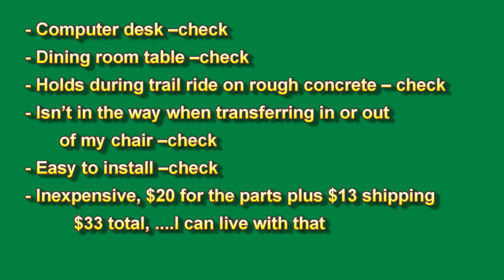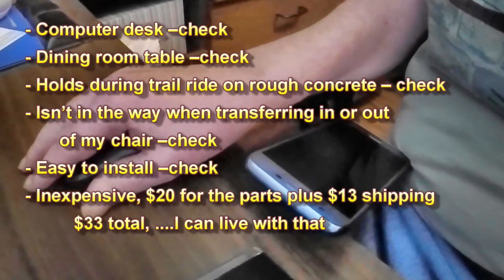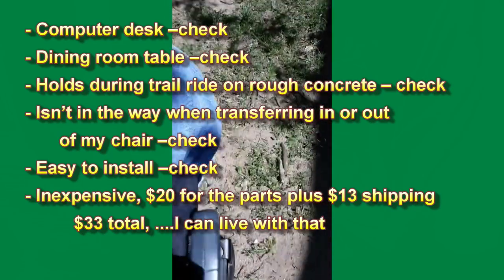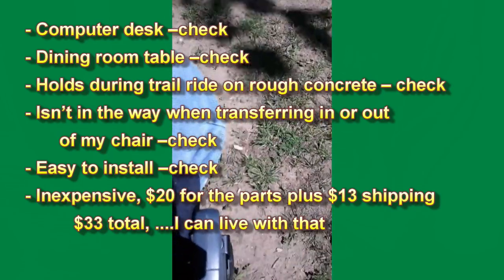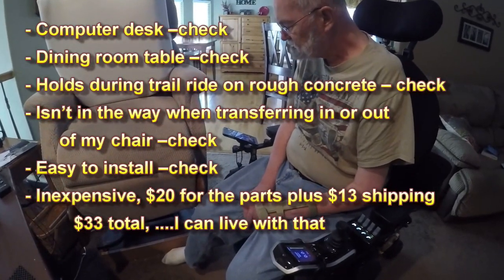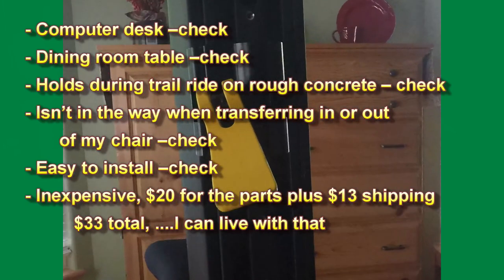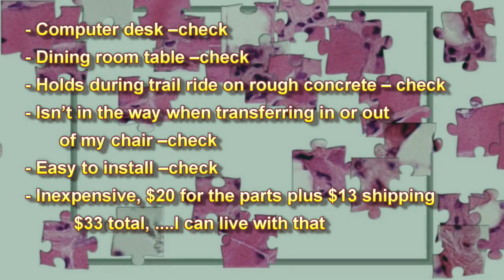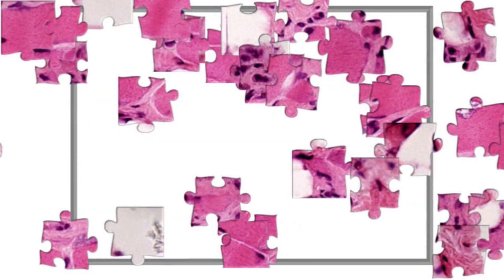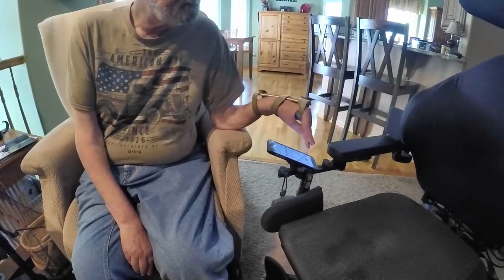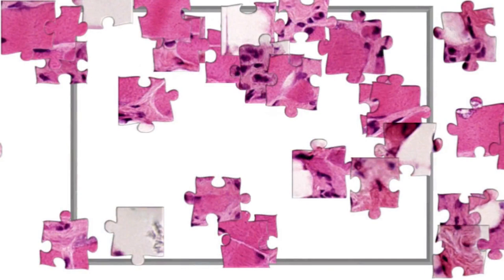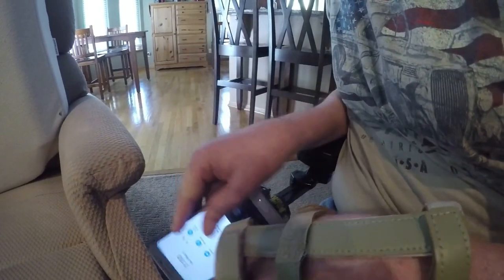Now for the post-installation test in all the locations I mentioned previously. At my computer desk — check. At the dining room or restaurant table — not a problem. Holds during a trail ride on rough concrete? Yes it does. Isn't in the way for transferring in and out of my chair? Nope. Easy to install? Yes it was. Inexpensive? $20 for the parts plus $13 shipping, $33 total — I can live with that. And there's a bonus benefit: because I park my power chair 90 degrees to my recliner, I can answer my phone while seated in my recliner with my left hand without removing it from the chair's mounting bracket. I can still easily remove it from the bracket and use the lanyard that stayed attached.